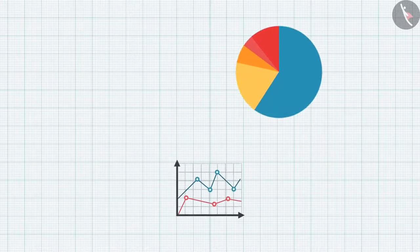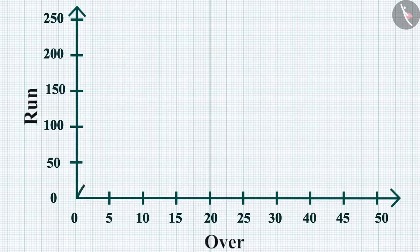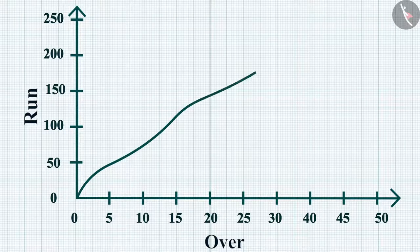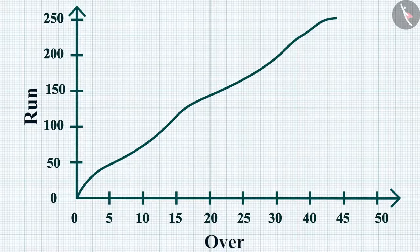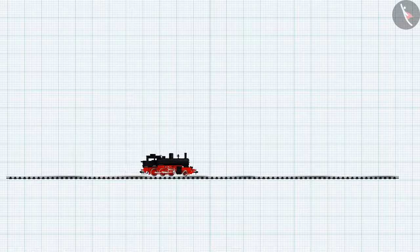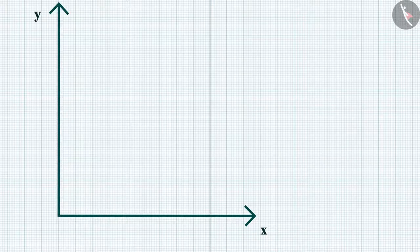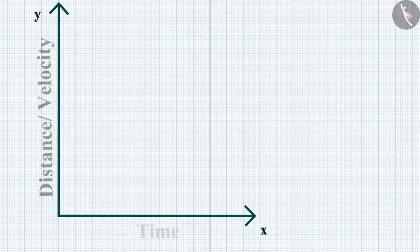Graphs offer an easy method to showcase the relation between two physical quantities. For example, during a cricket match we can represent the performance of a team in a runs versus overs graph. Similarly, we can represent the motion of an object in a line graph, showing one physical quantity like distance or velocity against another quantity such as time.